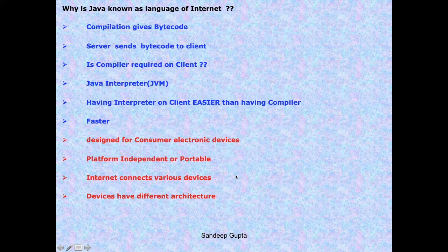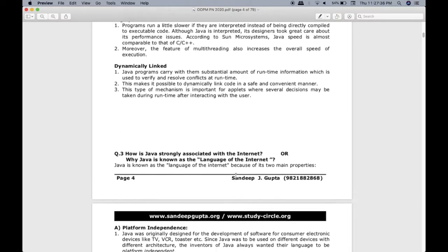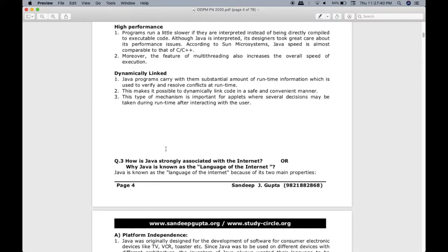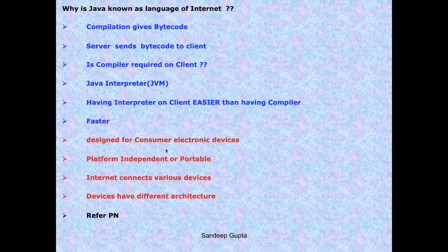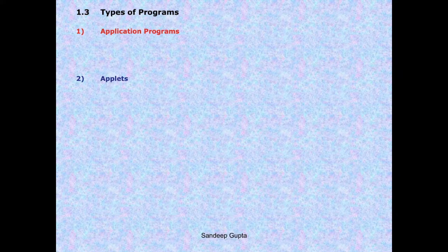The points in blue color are related to bytecode and the points in red color are related to platform independence. Because of bytecode and platform independence, Java is known as the language of the internet. This answer is in your printed notes - just write refer PN in your notebook. Give the next heading 1.3 Types of Programs. Whatever programs we do in Java are broadly divided into two categories: the first category is application programs, and the second category is called applets.